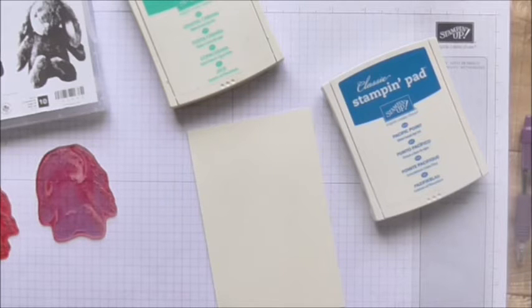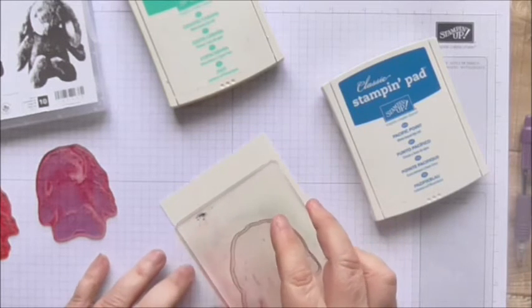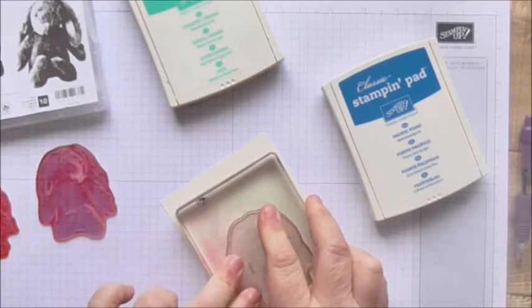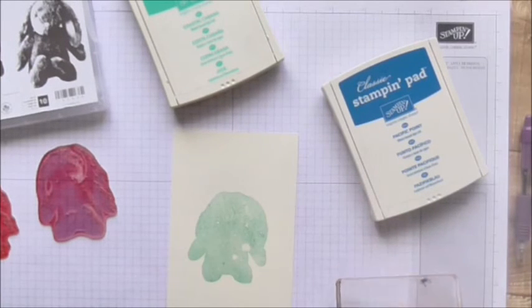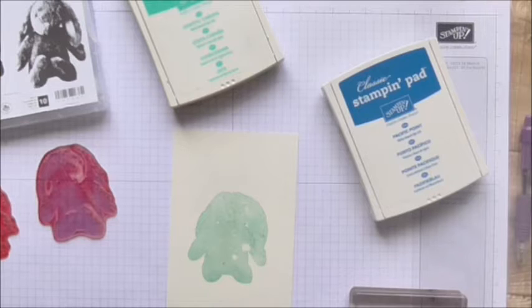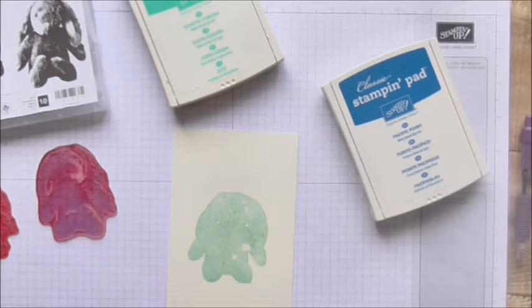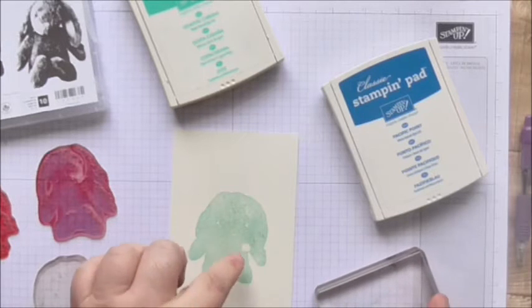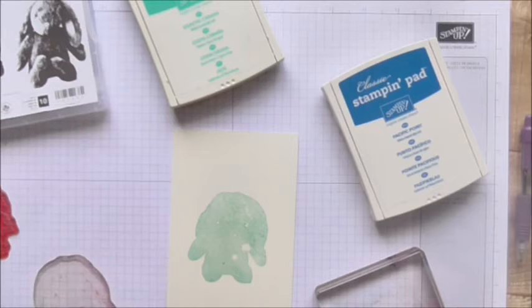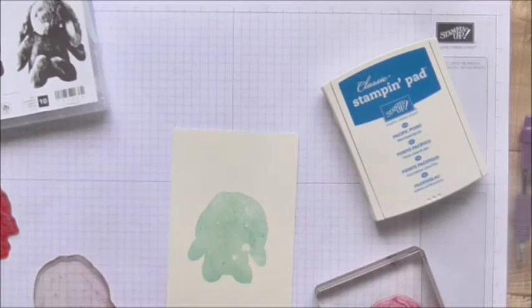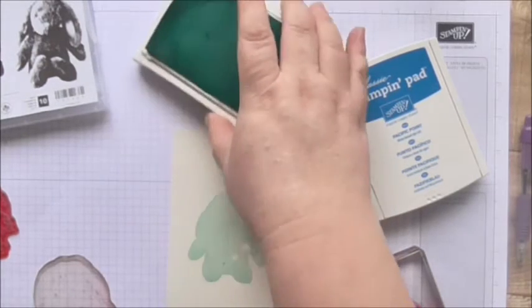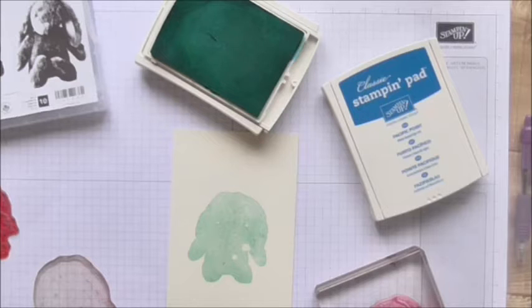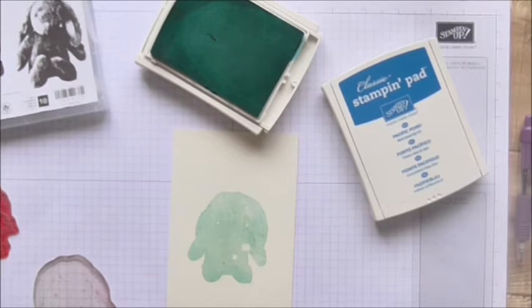Right, I've got Pacific Point, Pool Party, and Coastal Cabana here. So I think I'm going to splodge on in Pool Party. I don't even know if I've got the right side. I told you I'm no good at this sort of thing, didn't I? I'll make sure I've got the ink on. I think it doesn't seem to be going on well. Let's just see what's happening.